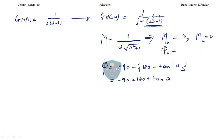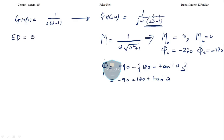So the total phi is minus 90 minus (180 minus tan inverse omega), which simplifies accordingly. Now find phi(0) and phi(infinity). Phi(0): put omega equal to 0, you get minus 270 degrees. Phi(infinity): put omega equal to infinity, you get minus 180 degrees. Now find the starting and ending directions. The ending direction is phi(0) minus phi(infinity): minus 270 minus (minus 180) gives minus 90, so it is anticlockwise.